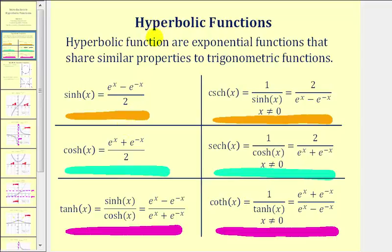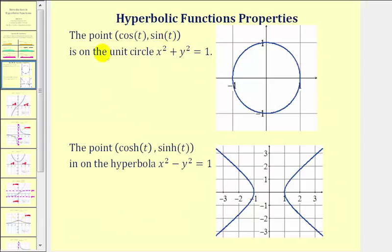Now let's talk about why they're called hyperbolic functions. We know if we have a point where the x-coordinate is cosine t and the y-coordinate is sine t, the point would fall on the unit circle, x squared plus y squared equals one. Similarly, if we have a point where the x-coordinate is hyperbolic cosine of t and the y-coordinate is hyperbolic sine of t, the point would be on the hyperbola x squared minus y squared equals one. Because these points are on a hyperbola, this is the reason why they're called the hyperbolic functions.